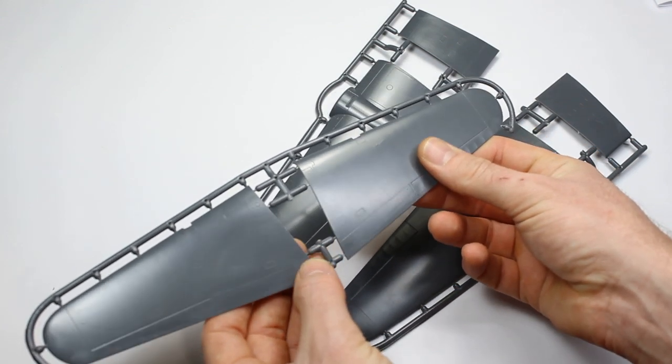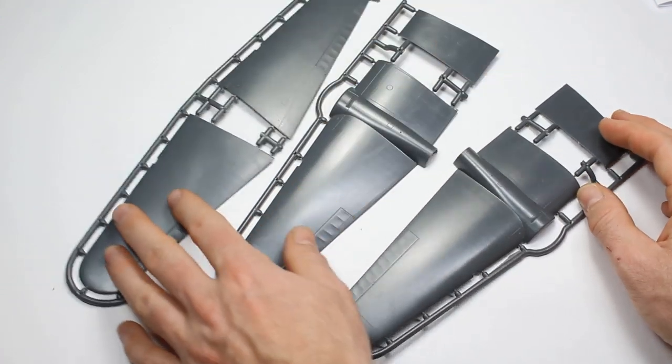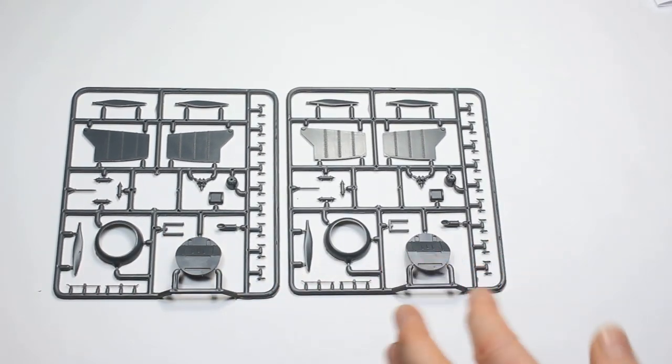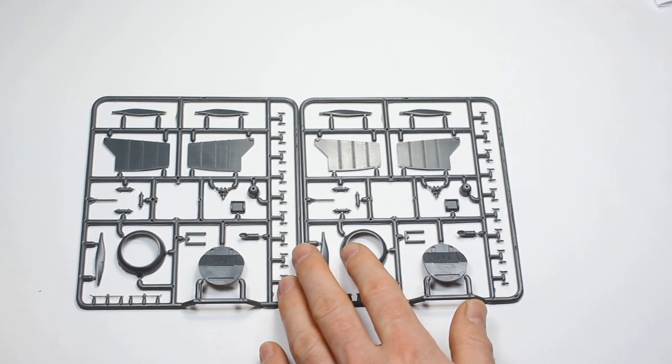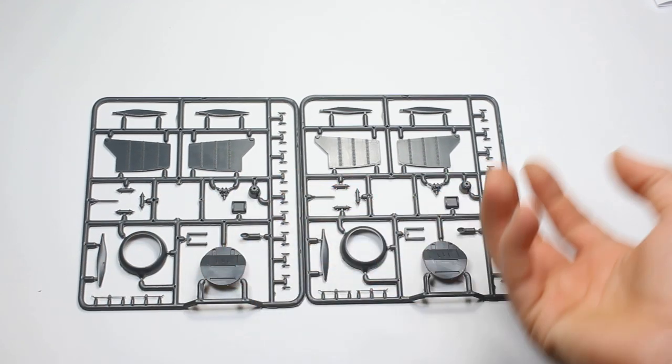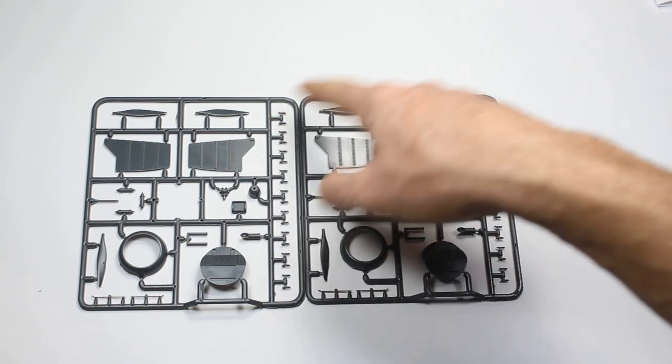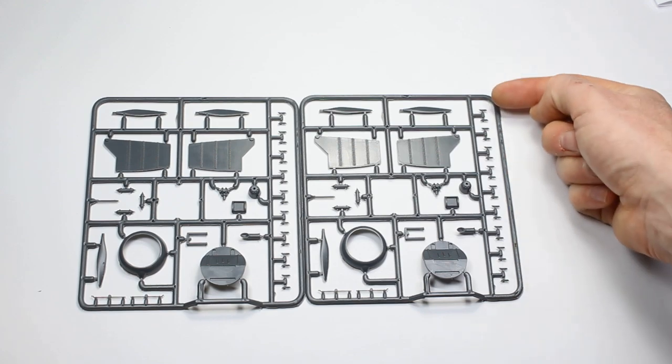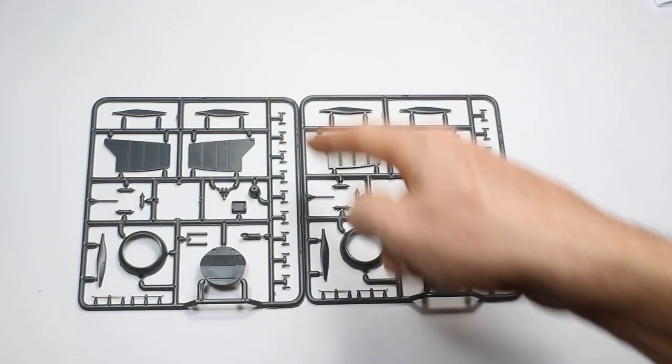On the underside we've got the aileron again, and we've also got the flaps that would open up, very finely done as well. Then we've got two duplicate sprues here which have parts for the engines and the landing gear—two cowlings, rear parts to the engine or the wheel wells, parts of the propellers which are separate, as well as quite a few bits for the engine.